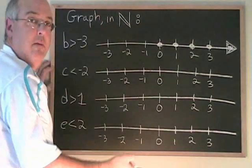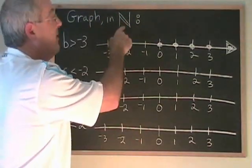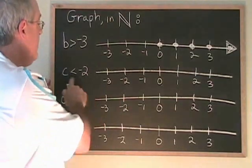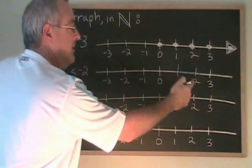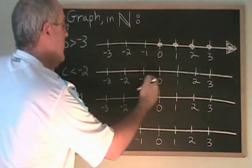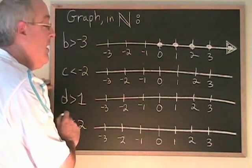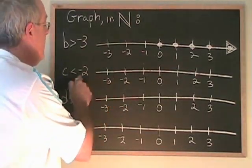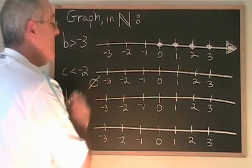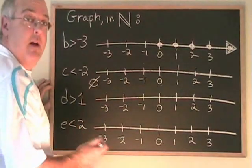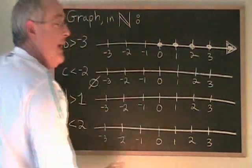The negative numbers cannot be part of the answer because they are not natural numbers. c less than negative 2 — the numbers that are less than negative 2 are over here to the left of negative 2 on the number line, and again, these are not natural numbers. So the answer is empty set again, and if I have to give the answer on the number line, I just give a blank number line.